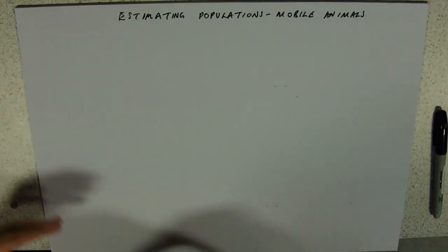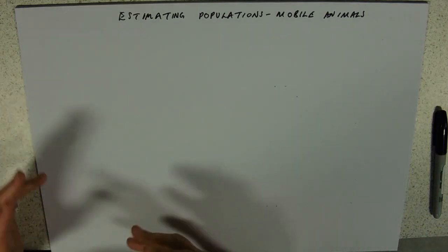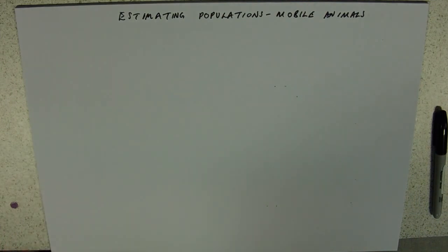Now the problem with mobile animals of course is that you start clomping around in a field or a woodland and half of your little mobile animals think oh, do you know what, I don't want to be here and they go away.